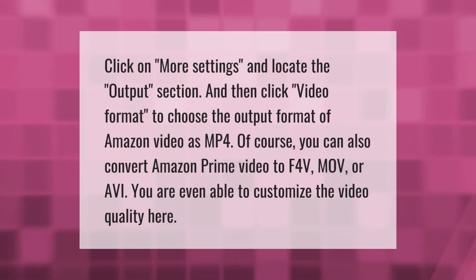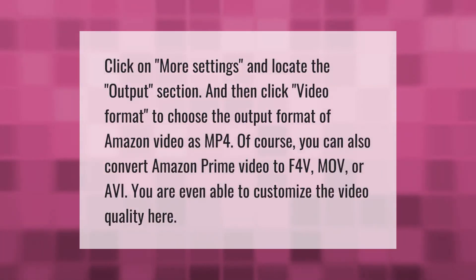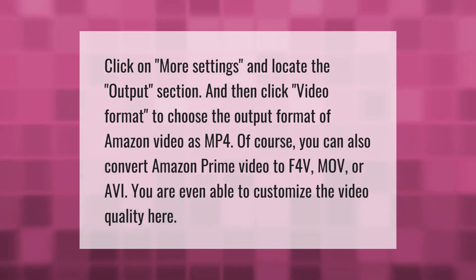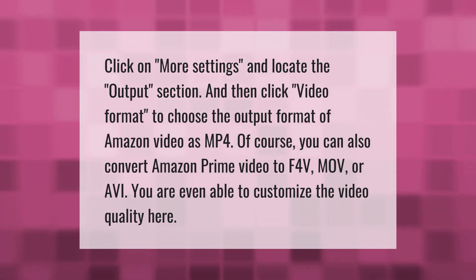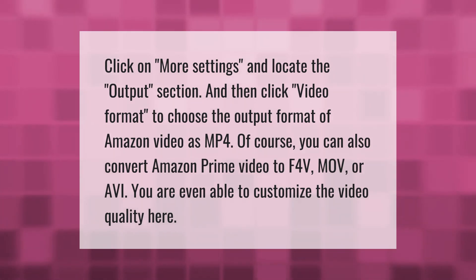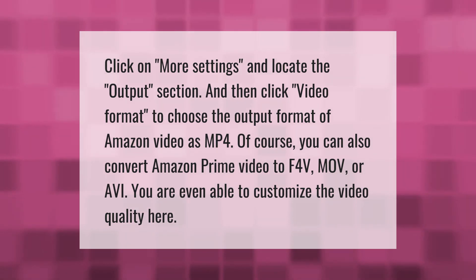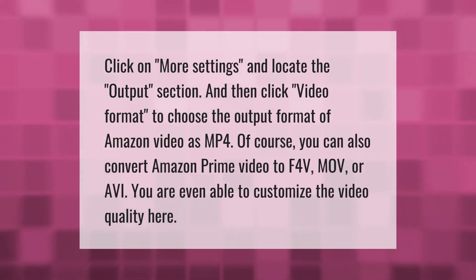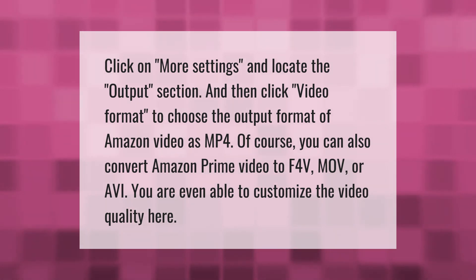Click on more settings and locate the output section, then click video format to choose the output format of Amazon video as MP4. You can also convert Amazon Prime Video to F4V, MOV, or AVI. You are even able to customize the video quality here.